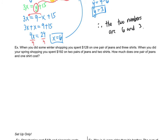Let's go to another example — this one's money related. When you did some winter shopping, you spent $128 on one pair of jeans and three shirts. When you did your spring shopping, you spent $192 on two pairs of jeans and two shirts. How much does one pair of jeans and one shirt cost? Let J represent cost of jeans, and let S represent cost of shirt.